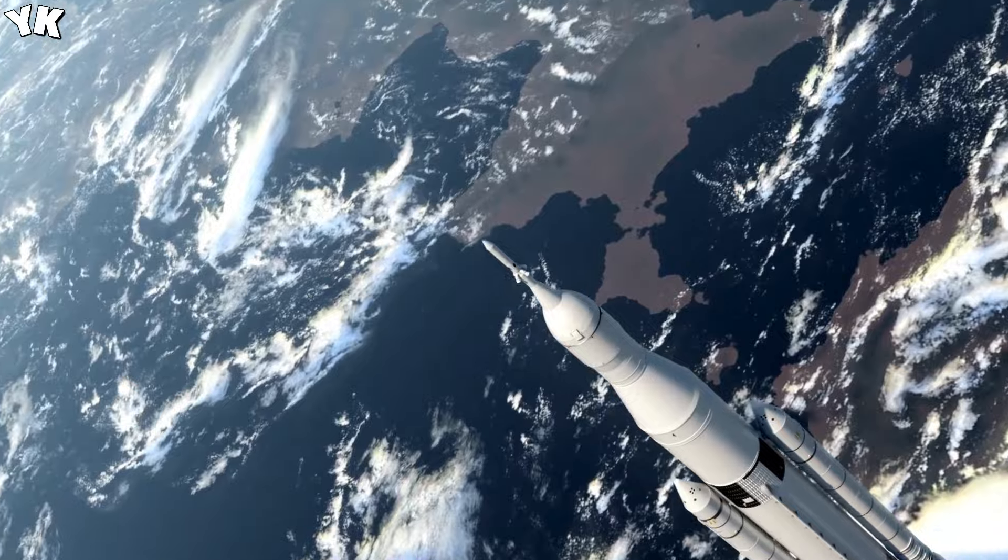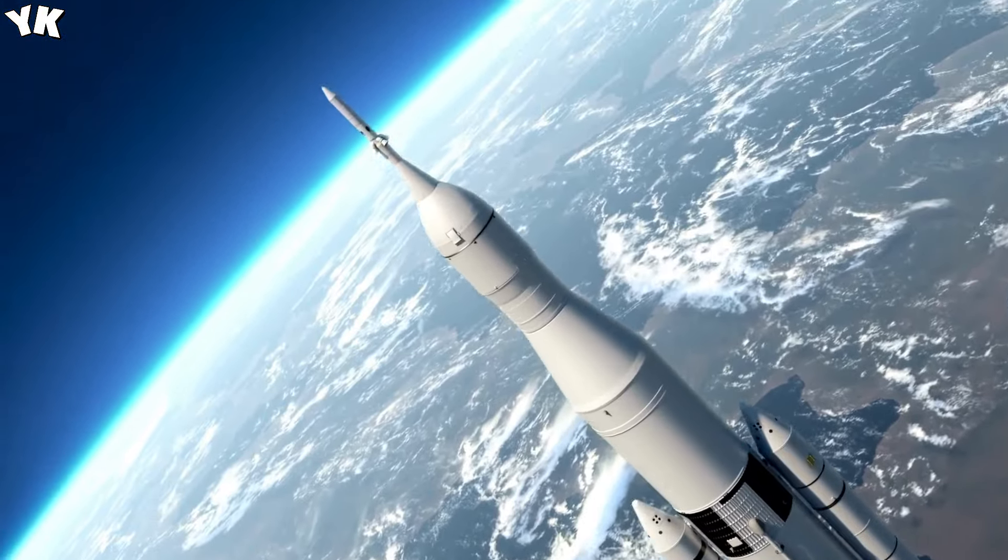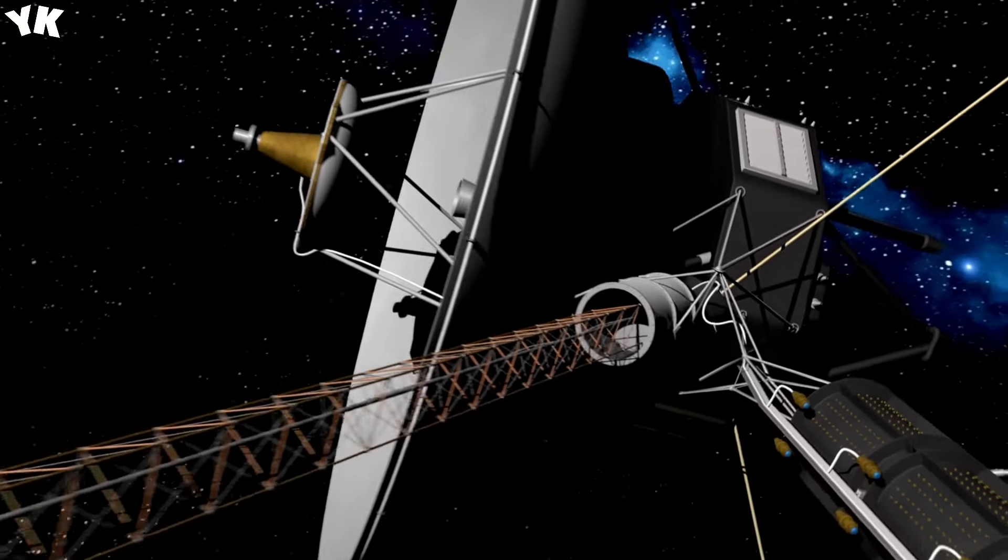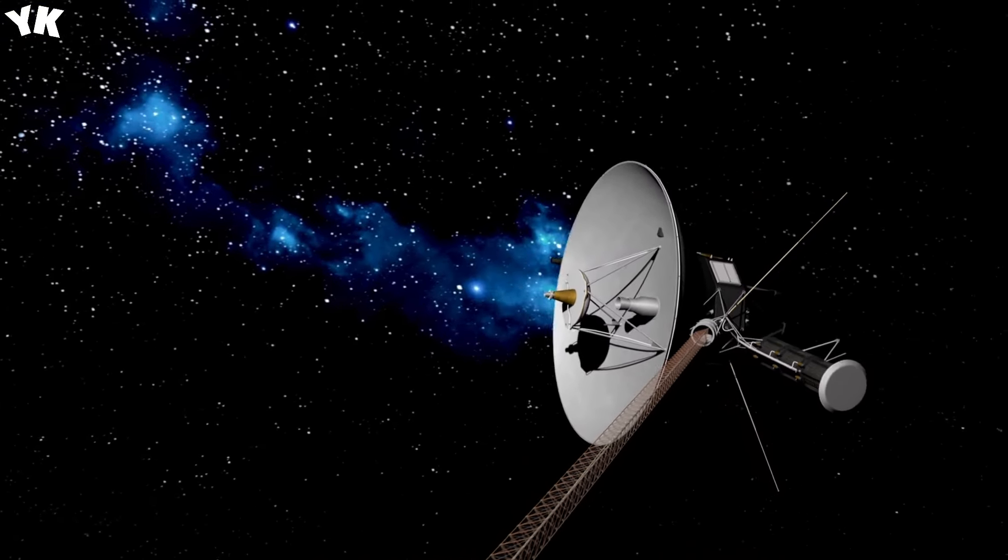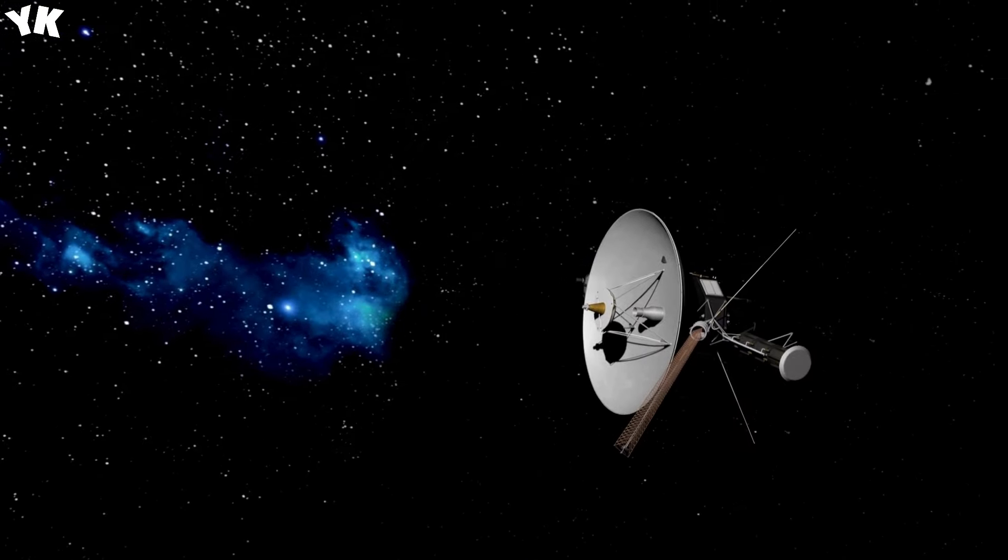How far can Voyager 1 go? As Voyager travels further and further away from Earth it takes longer to send and receive signals. The signal strength also gets weaker and data rates become slower making it harder and harder to communicate with the spacecraft.